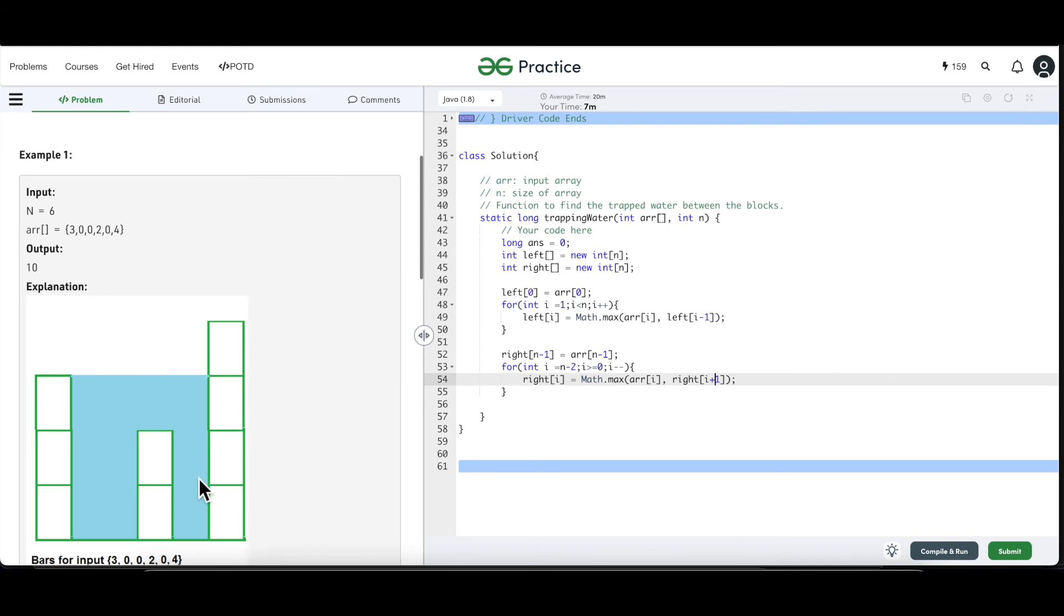So instead of starting from the last element, we are starting from the second last element and we are checking whether the current element is greater or the element which is already stored, the immediate rightmost next element and that is greater. And in this way, we are trying to do the array preprocessing for figuring out what is the maximum height of the left. From the left, what is the maximum height of a block and from the right, what is the maximum height of a block?